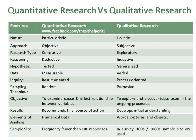Hypotheses are tested in quantitative research while hypotheses are generalized in qualitative research. Data in quantitative research is measurable while data in qualitative research is verbal. Inquiry in quantitative research is result-oriented while inquiry in qualitative research is process-oriented. Sampling technique in quantitative research is random while sampling technique in qualitative research is purposive.